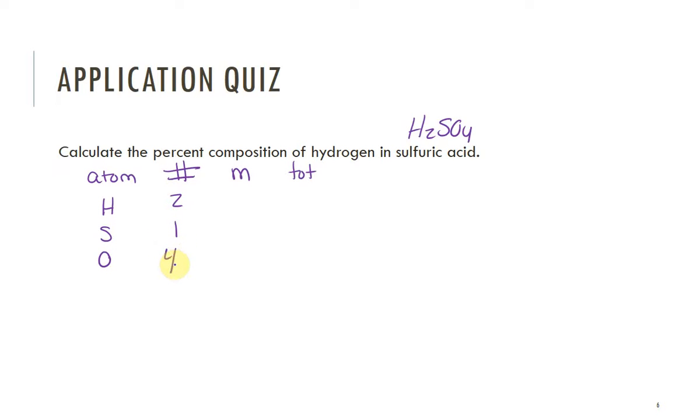On the periodic table there's 1.01 for hydrogen, sulfur is 32.06, and oxygen is 16. So we multiply across and we have 2.02, 32.06, and 64. Now when we add this up, you're going to just enter it in the calculator as is, or you can do it by hand. This should be 98.08 grams per mole.